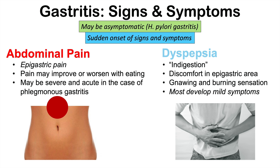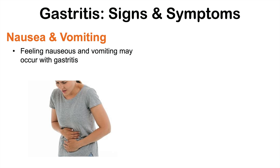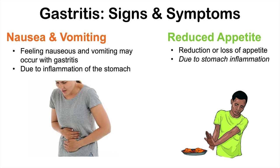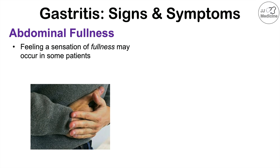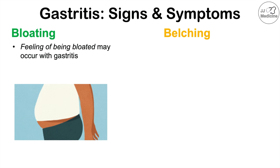Some other signs and symptoms include nausea and vomiting — feeling nauseous and vomiting may occur with gastritis due to inflammation of the stomach. This can also lead to a reduced appetite. Patients can also report abdominal fullness — a sensation of fullness in the epigastric area that occurs after eating. Patients with gastritis can also experience bloating, and belching — more frequent burping — may also occur.